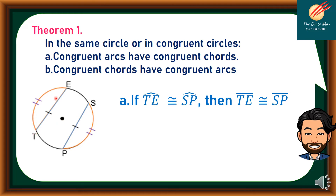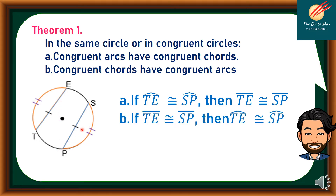Arc TE is congruent to Arc SP. Then we can say that line segment TE is congruent to line segment SP — or the chord TE is congruent to chord SP. Also, if chord TE is congruent to chord SP, then Arc TE is congruent to Arc SP.